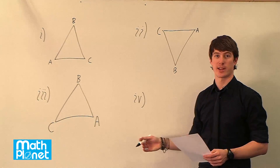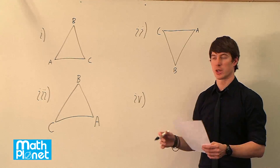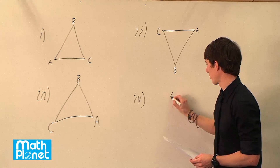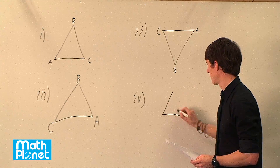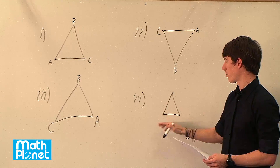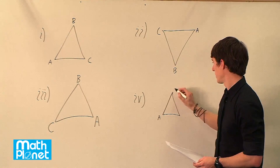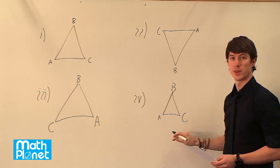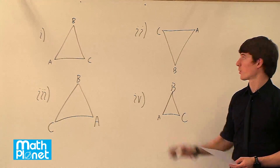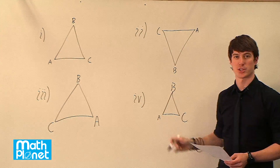The last thing we can do is called dilation — making something larger or smaller. So perhaps we just take the original triangle and draw it a little bit smaller. The angles are still in the same place, the points are still in the same place — A, B, and C — but it's a smaller triangle. So we've got rotation, reflection, and dilation.